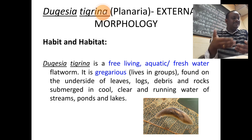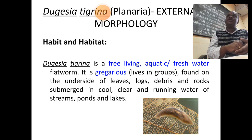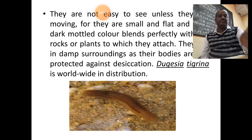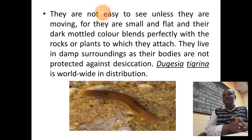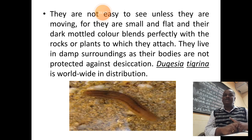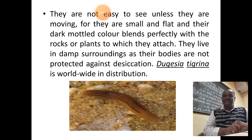Its dwelling place or habitat is the underside of leaves, logs, and even on submerged rocks, which we find in freshwater bodies like ponds, lakes, and rivers — water which is clean in nature. Planaria is mostly invisible to identify, not because of its size but its activities — its color blends with the background. Its distribution is worldwide.